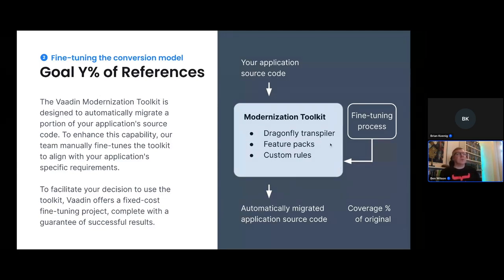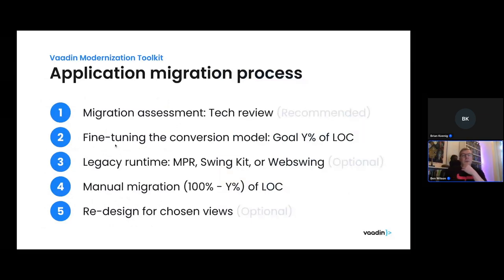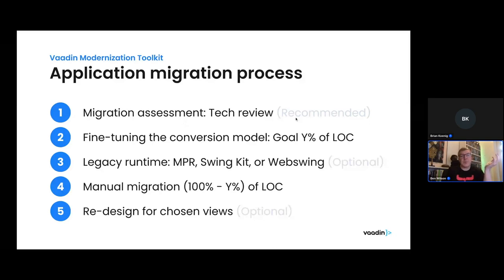The three core components of the modernization toolkit are: the Dragonfly transpiler, the feature packs, and the fixed-price fine-tuning service. These are the three components you would expect in most modernizations going forward. Now, we skipped ahead earlier — we skipped the migration assessment — but now that we understand Dragonfly, feature packs, and fine-tuning, we can go back to a step we do recommend: performing a migration assessment.